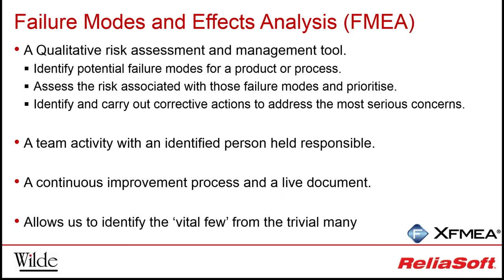The first tool is the Failure Modes and Effects Analysis — usually called an FMEA. It's a qualitative technique all about understanding and managing risk. There are many different types of FMEAs, including FMECAs which include more detailed risk-ranking techniques, but the most important thing is the method and what we're trying to achieve with it. Potential failure modes are identified — best achieved by those who understand the product — and then ranked based on how likely and severe their occurrence will be. Based on that information, actions are raised to deal with the most critical issues, with less time wasted on issues of less concern. The FMEA should be treated as a live document, reviewed and updated as the design develops, with the purpose of identifying the vital few issues from the trivial many.